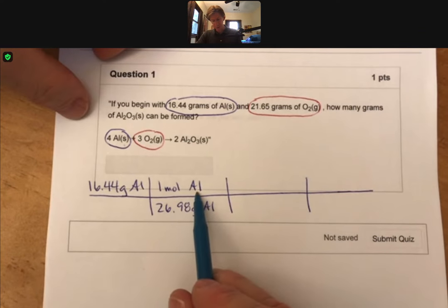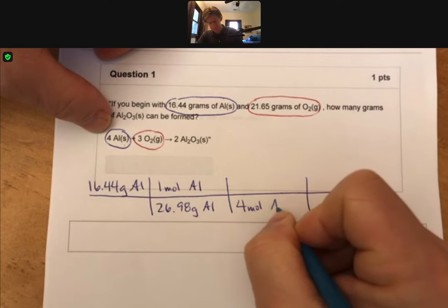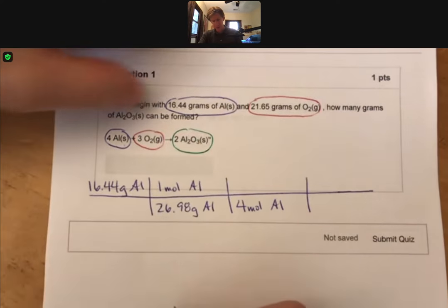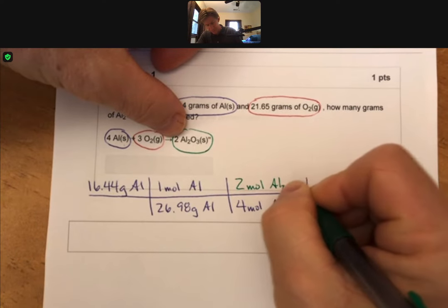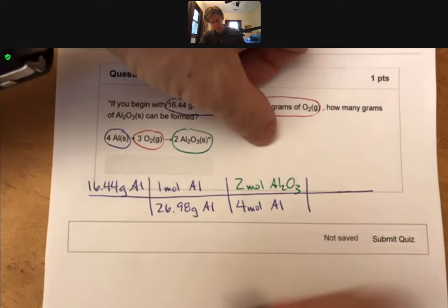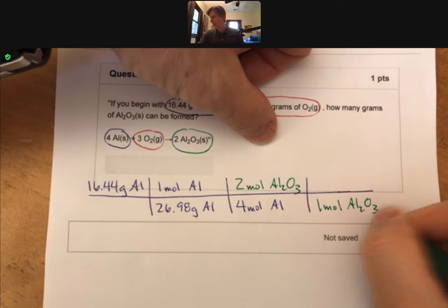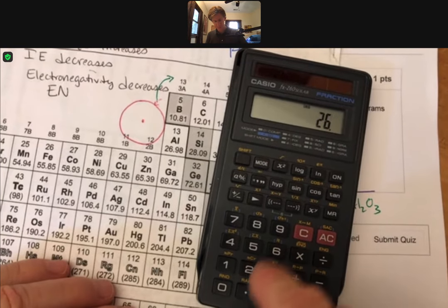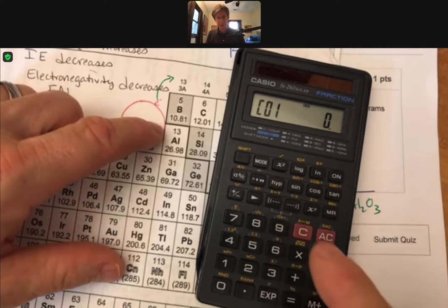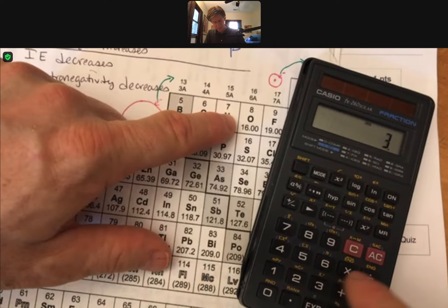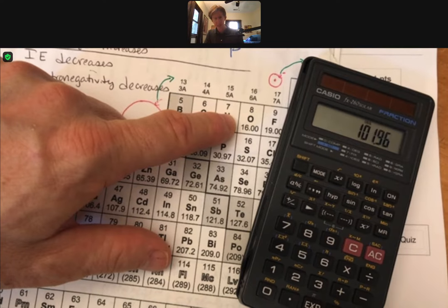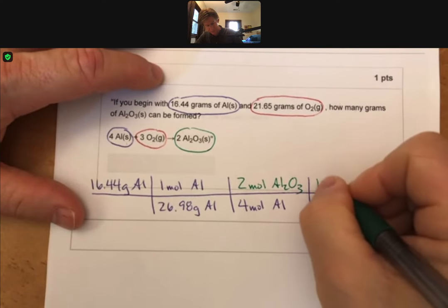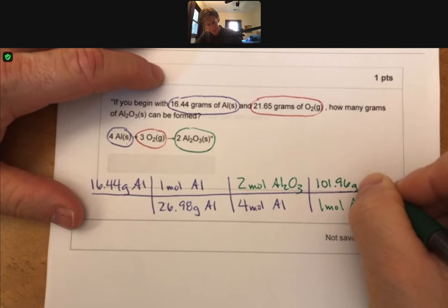We have moles of aluminum for every four moles of aluminum reacted. We're trying to get aluminum oxide. There are two moles of aluminum oxide produced. And then we can go to our periodic table and look up two times the molar mass of aluminum plus three times the molar mass of oxygen is 48. I get 101.96 for this molar mass. Grams, aluminum oxide.